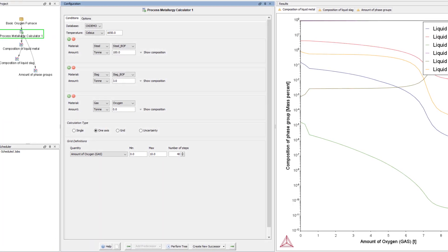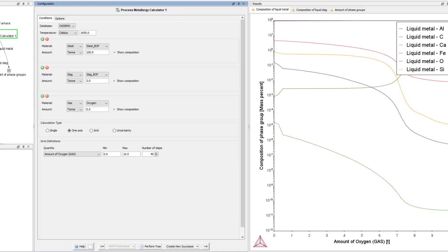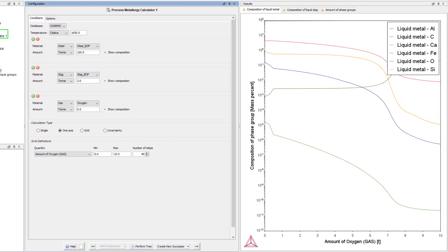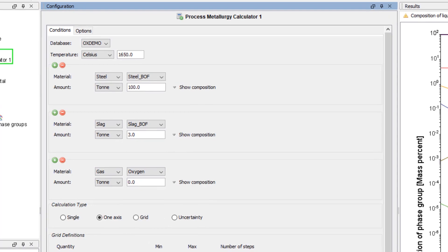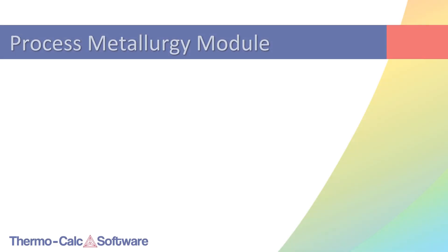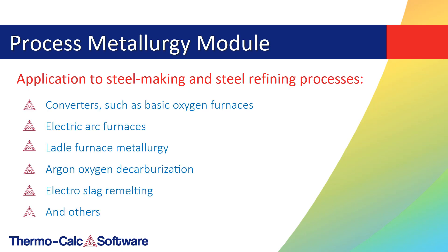Introducing Thermo-Calc 2019b, which includes a new module that makes it easy to set up calculations for steel and slag: the Process Metallurgy module. The new module is designed for application to steelmaking and steel refining processes, including converters such as basic oxygen furnaces, electric arc furnaces, ladle furnace metallurgy, and more.